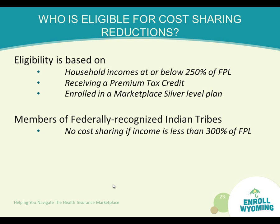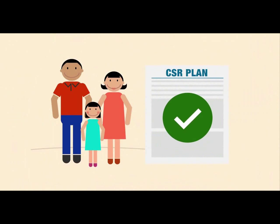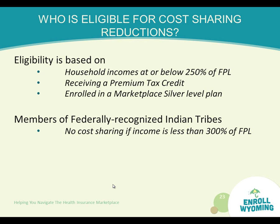Eligibility for cost-sharing is a smaller range than for tax credits. Individuals with incomes between 100% and 250% of the federal poverty level qualify for the out-of-pocket cost-sharing. You must also be receiving the premium tax credit and be enrolled in a silver-level plan. With the tax credit, you can choose any metallic level plan, but to receive cost-sharing, you must select a silver-level plan. Tribal members will have no cost-sharing if their income is less than 300% of the federal poverty level.